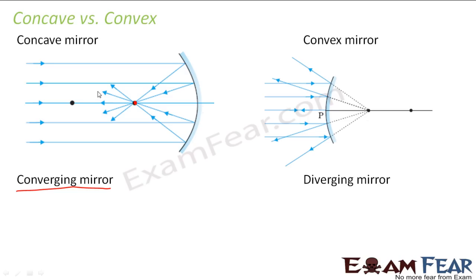Whereas, convex mirror is known as a diverging mirror because here you see, the rays of light which are falling on the convex mirror, after reflection, they all get diverged. So it is known as a diverging mirror. So concave is a converging mirror and convex is a diverging mirror.